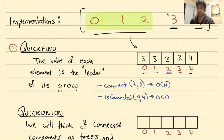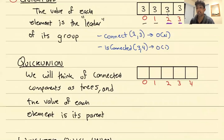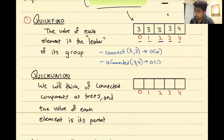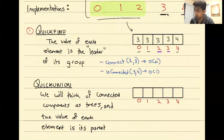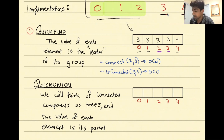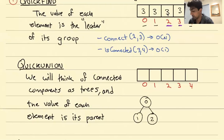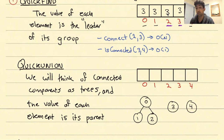Quick Find does really well for isConnected but is pretty awful for connect. Is there a better approach? This is a radical shift: our next idea is to represent each connected component as a tree. Using the same example — 0, 1, 2 as one group — instead of imagining them as a blob, we imagine their connected component as a tree. We say 0 is the root, and 1 and 2 are children of 0. The other two components, 3 and 4, are their own single-node trees.